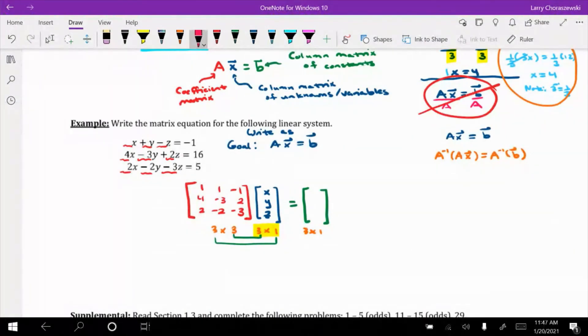Now, the constant values are negative 1, 16, and 5. So I'll order them according to that. And boom, there's our matrix equation. Any questions about the solution to this example or anything else that we've done on this page?